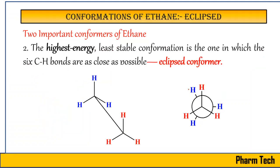Coming to the other extreme conformer, which is called the eclipsed conformer. The eclipsed conformer is the highest energy conformer. In the eclipsed conformation, when you overlap the front and back carbons, you can see only the hydrogens of the front carbon — the back hydrogens are completely hidden. The back hydrogens overlap with the front hydrogens, so you see only one hydrogen at a time. This is what we call the eclipsed conformer.